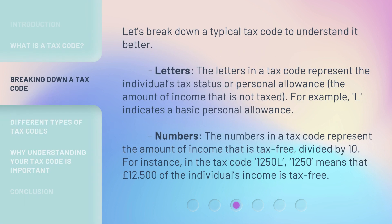Let's break down a typical tax code to understand it better. Letters: the letters in a tax code represent the individual's tax status or personal allowance — the amount of income that is not taxed. For example, 'L' indicates a basic personal allowance.